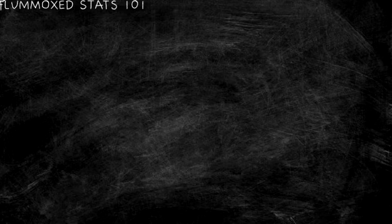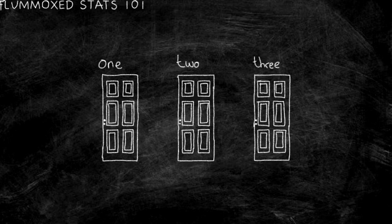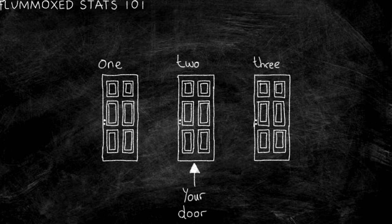Monty Hall asks you to choose one of three doors. One of the doors hides a prize and the other two have nothing. You state out loud which door you want, but you don't open it right away. Monty then opens one of the other two doors and there is no prize behind it.